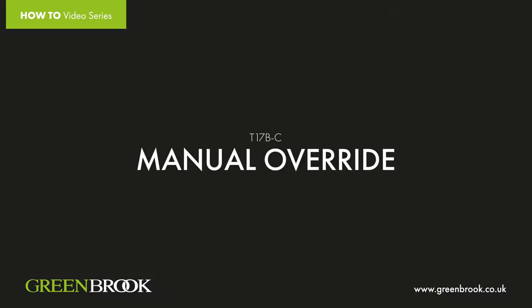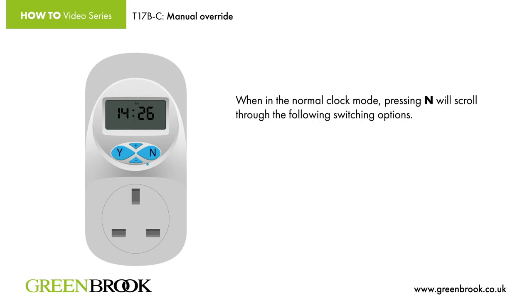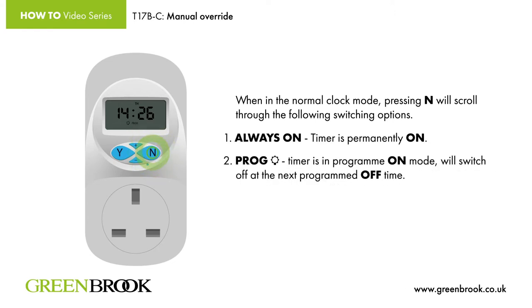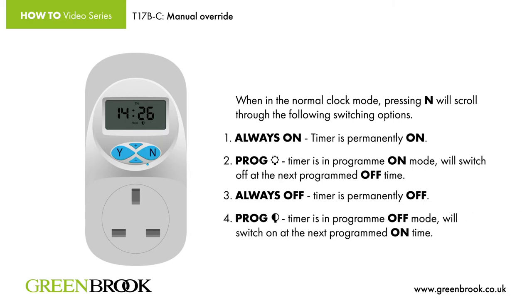Manual override. When in the normal clock mode, pressing N will scroll through the following switching options. 1: Always on — timer is permanently on. 2: Prog — timer is in program on mode and will switch off at the next programmed off time. 3: Always off — timer is permanently off. 4: Prog — timer is in program off mode and will switch on at the next programmed on time.